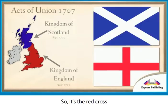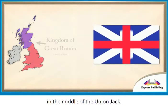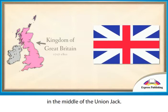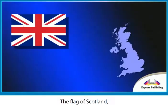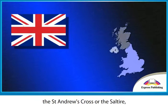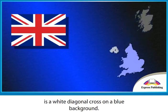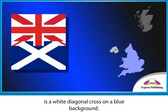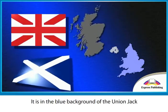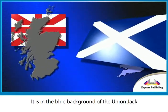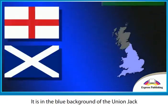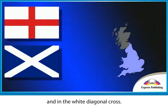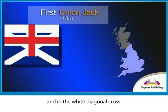So it's the red cross in the middle of the Union Jack. The flag of Scotland, the St. Andrew's Cross or the Saltire, is a white diagonal cross on a blue background. It is in the blue background of the Union Jack and in the white diagonal cross.